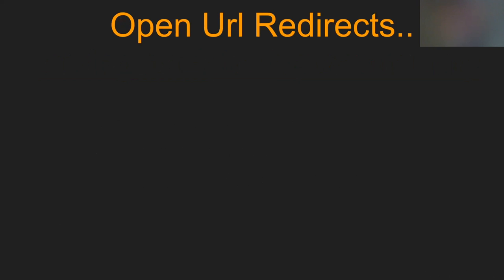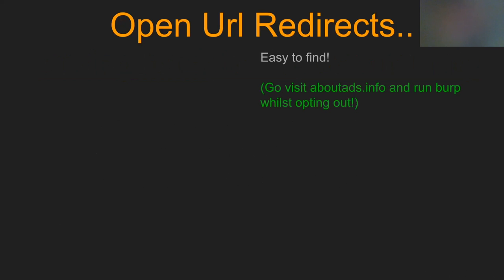We're going to begin with simple open URL redirects. Everyone knows what they are, but for people who don't, it's simply an endpoint where you input a URL and it will redirect to that URL. They're extremely easy to find — you can simply visit aboutads.info, run Burp while you're opting out, and you will see a crazy amount of open URL redirects, including one that has a bounty program.